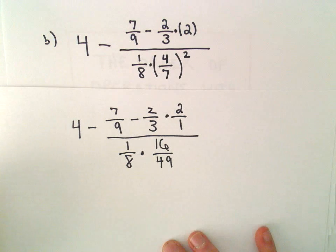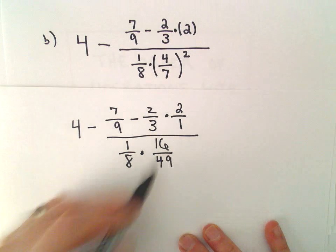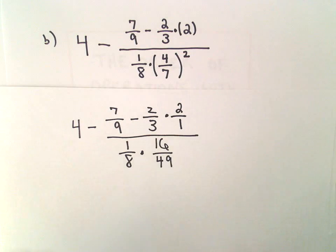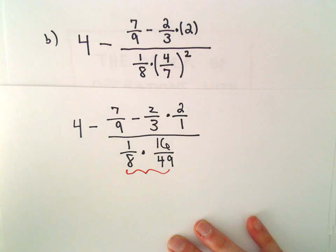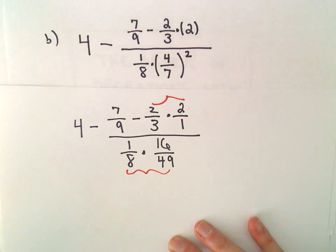All right, so let's see here. The next thing I see now, I've got rid of my exponents by squaring, so now I'm going to do the multiplication. I'm going to multiply those two digits, and then I'm going to multiply those two digits as well.